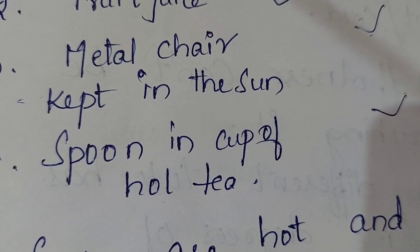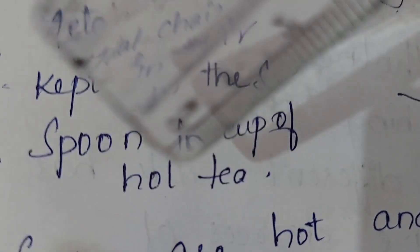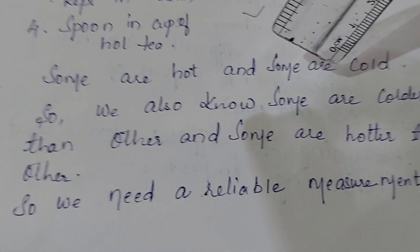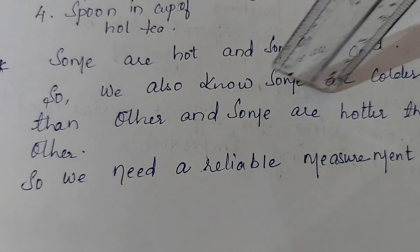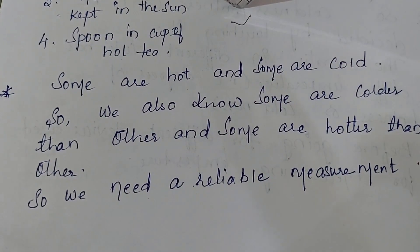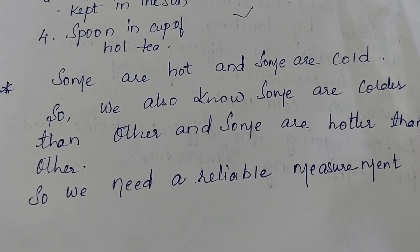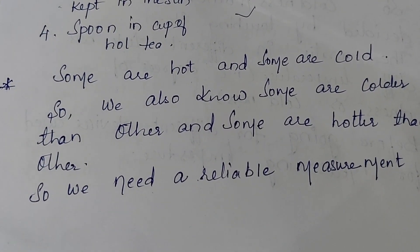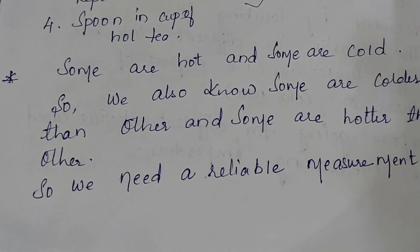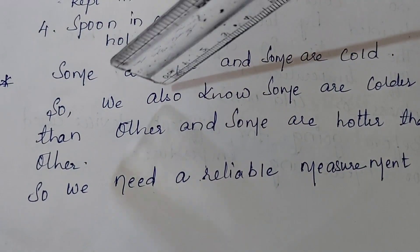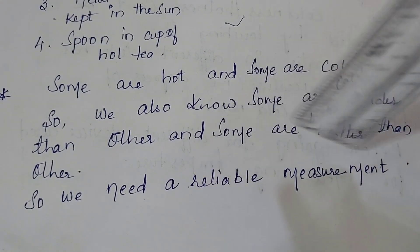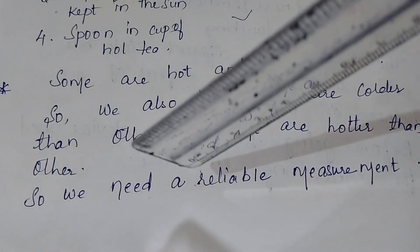Hotness and coldness can vary, and by touching you can't always correctly say something is hot or cold. Some are hotter than others — like hot water from a geyser will be very hot, more than regular hot water. In two hot bodies and two cold bodies you can also say this is more cold or more hot. So we can't judge by touching; we need a reliable measurement to measure hotness and coldness.